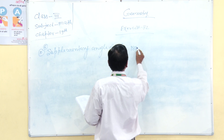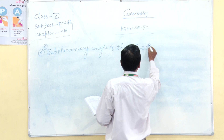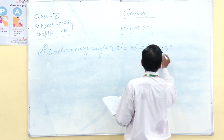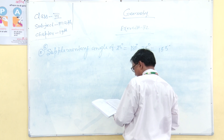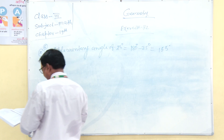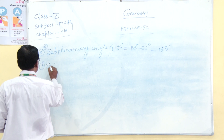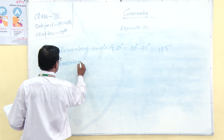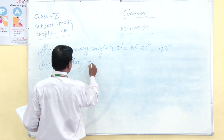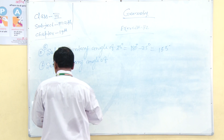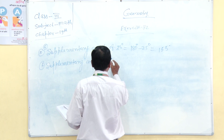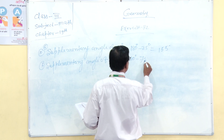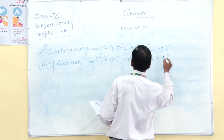The supplementary angle of 25 degrees is 180 degrees minus 25 degrees, which equals 155 degrees. Then the complementary and supplementary angle of 75 degrees: the supplementary angle is 180 degrees minus 75 degrees, equal to 105 degrees.